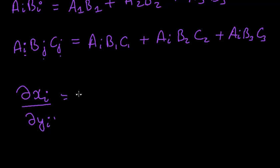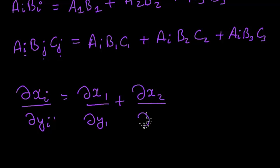So what we have to do is write all the values that i can take: partial of x_1 with respect to y_1, plus partial of x_2 over partial of y_2, and partial of x_3 over partial of y_3. So it's the sum of the partial derivatives like this.